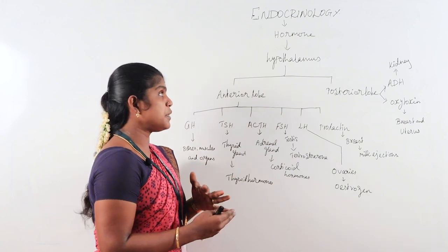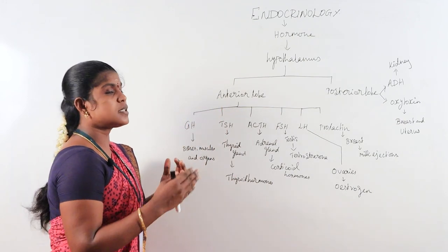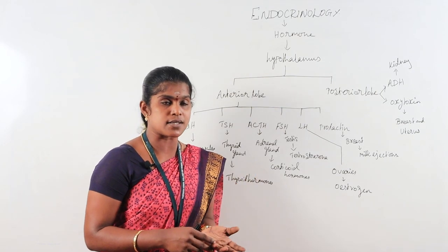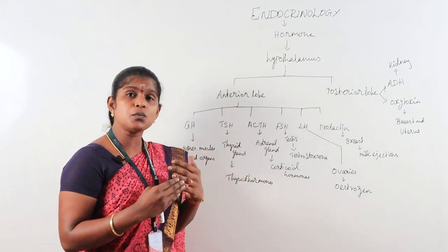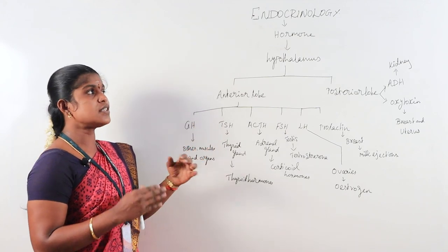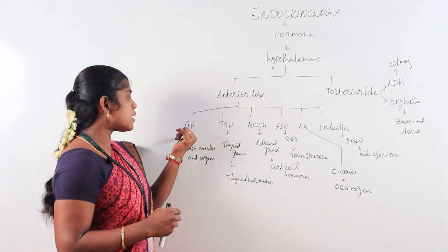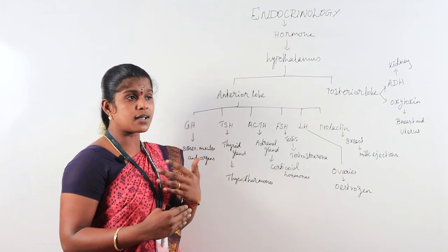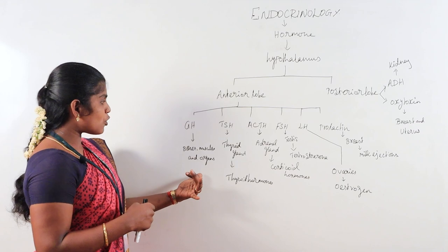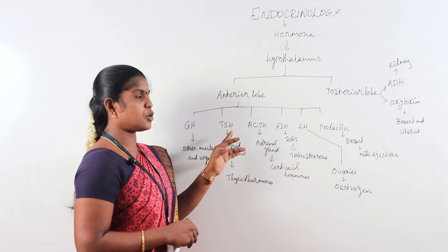Hormones act as chemical messengers on the second messenger system. Growth hormone plays a very important role in body mass increase and bodybuilding. TSH is the thyroid stimulating hormone acting on T3 and T4.